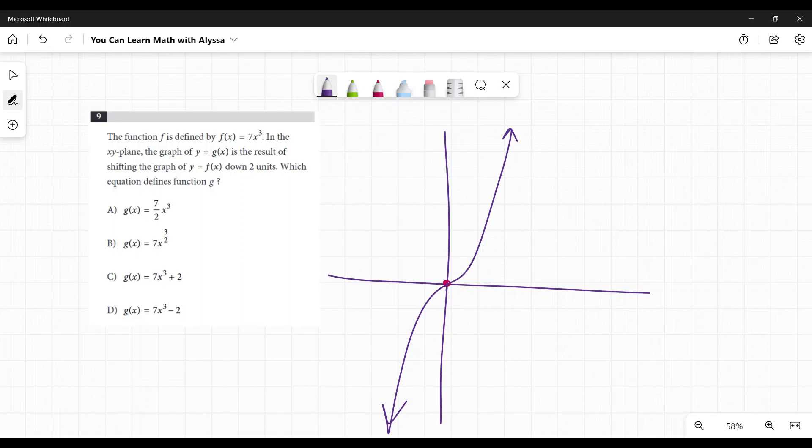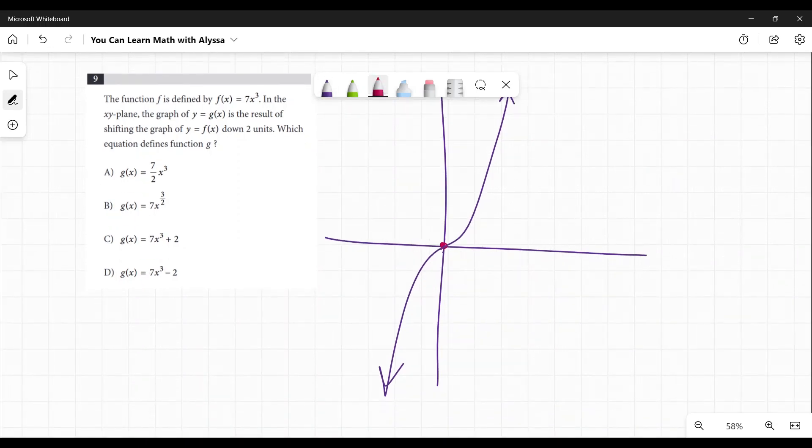Now they're saying there's another function, g(x). And g(x) is the result of shifting the graph of y = f(x) down two units. So g(x) is going to be this whole graph just moved down two. It's going to look identical, which I clearly am incapable of doing.